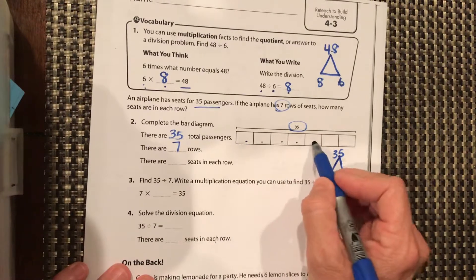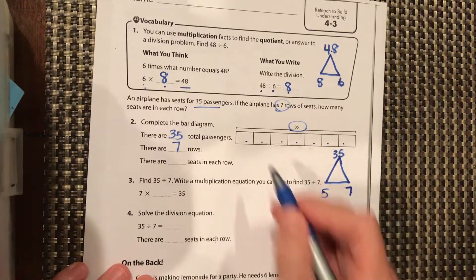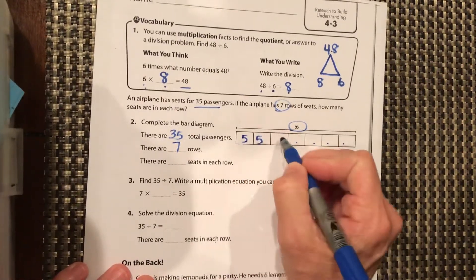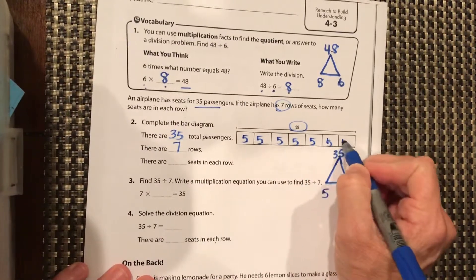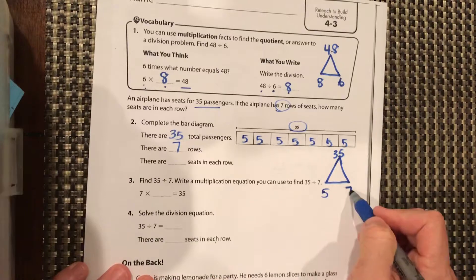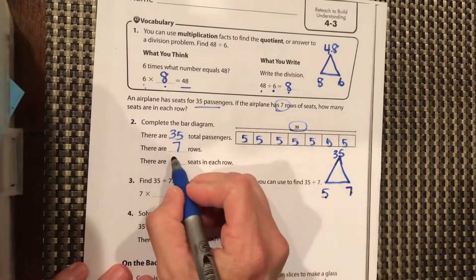1, 2, 3, 4, 5, 6, 7. So each one of these is a row, and we can go 5, 10, 15, 20, 25, 30, 35. So 7 times 5 equals 35.